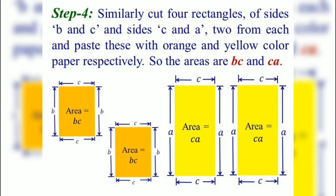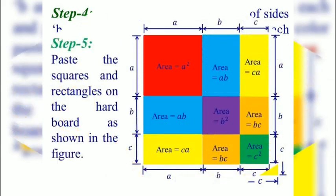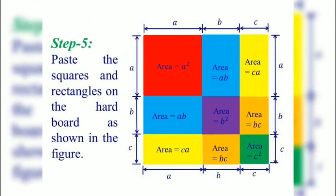So far we have got nine figures — three squares and six rectangles. Paste the squares and rectangles on the hardboard as shown in the figure. All nine figures are pasted on the hardboard, and this forms a square having side A plus B plus C.